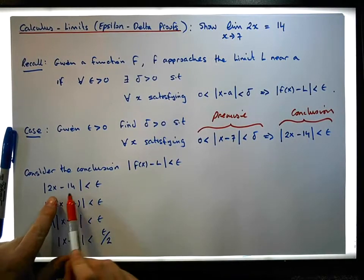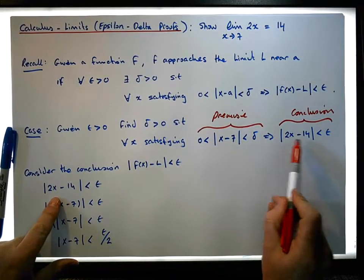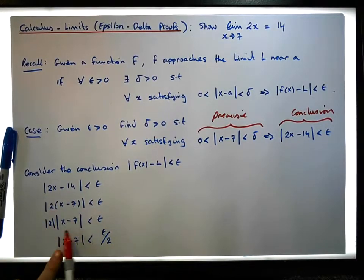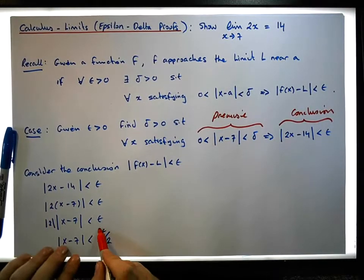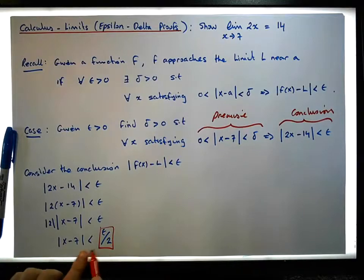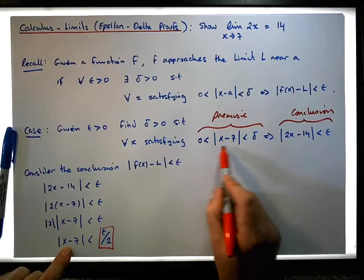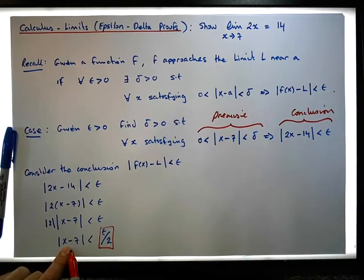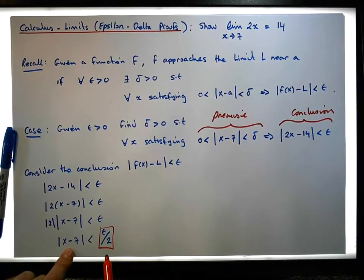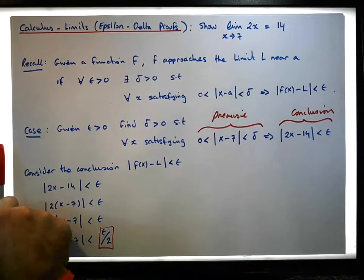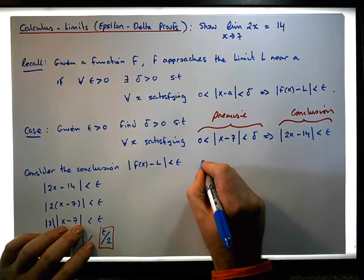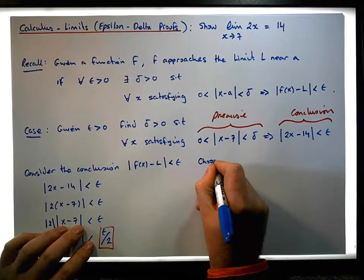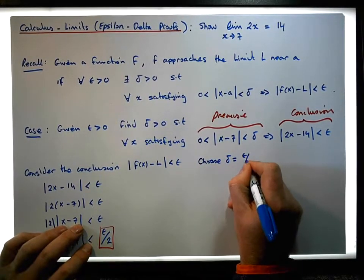So using the conclusion as a starting point, we can use the conclusions to try to find a value. There's a value here that's true from the conclusion — that x minus seven, this part of the premise, satisfies the absolute value of x minus seven is less than epsilon over two. So why don't we choose delta to be epsilon over two? Let's choose delta to be equal to epsilon over two.